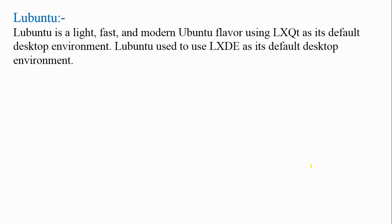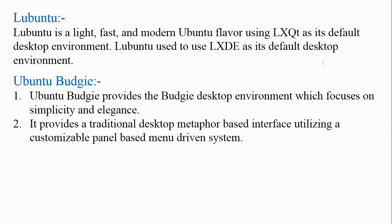The second flavor is Lubuntu. Lubuntu is a light, fast, and modern Ubuntu flavor using LXQt as its default desktop environment; it previously used LXDE. The next flavor is Budgie, which provides the Budgie desktop environment. It focuses on simplicity and elegance and provides a traditional desktop metaphor-based interface using a customizable panel-based, menu-driven system.